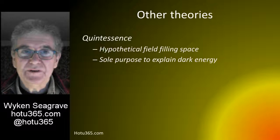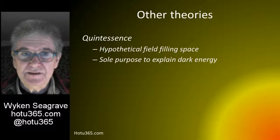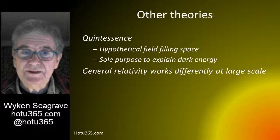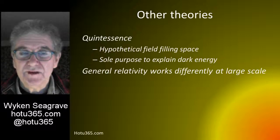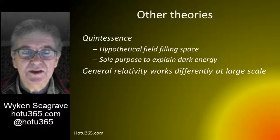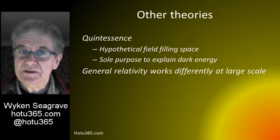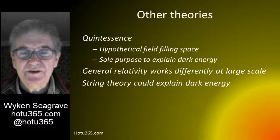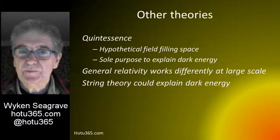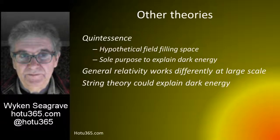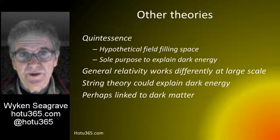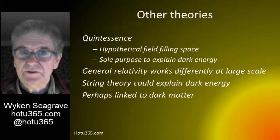A second theory proposes a field called quintessence, which is supposed to explain dark energy, but we have no idea what quintessence consists of. A third theory is that general relativity itself changes as you look at larger and larger scales in the universe - Einstein's laws work well on a local scale, but on a big scale we need something different. Another idea is string theory, a complex mathematical theory which claims to explain many different things, one of which is dark energy. And another possibility is that dark energy is somehow linked to dark matter, so the explanation for them both could be linked together.